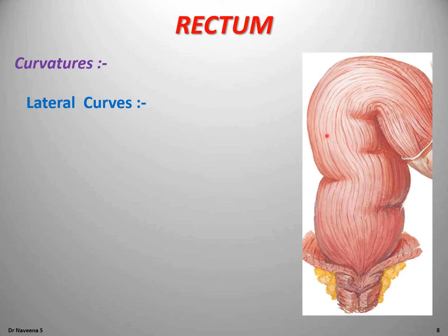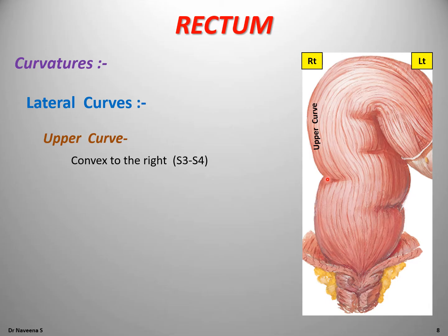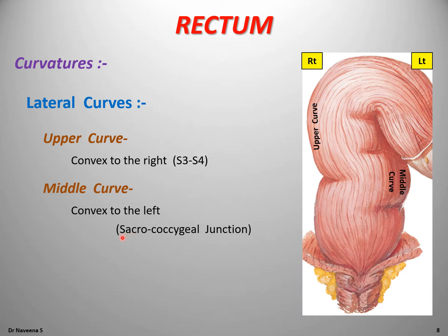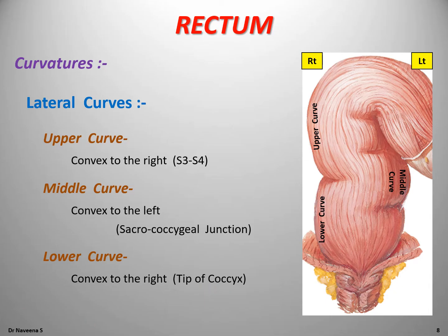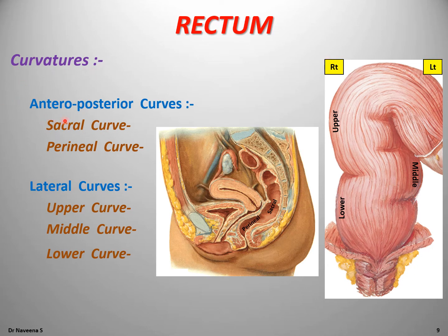The lateral curves of the rectum are 3 in number: 2 on the right side and 1 on the left side. The upper curve has convexity towards the right and lies at the junction of the 3rd and 4th sacral vertebrae. The middle curve has convexity towards the left and lies at the sacrococcygeal junction. The lower curve has convexity towards the right and lies at the level of the tip of the coccyx.